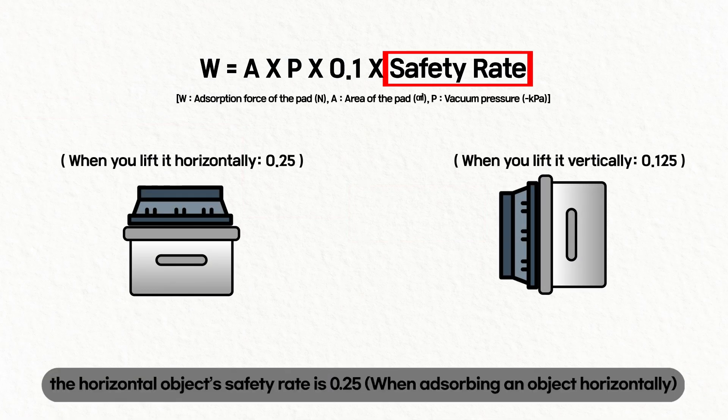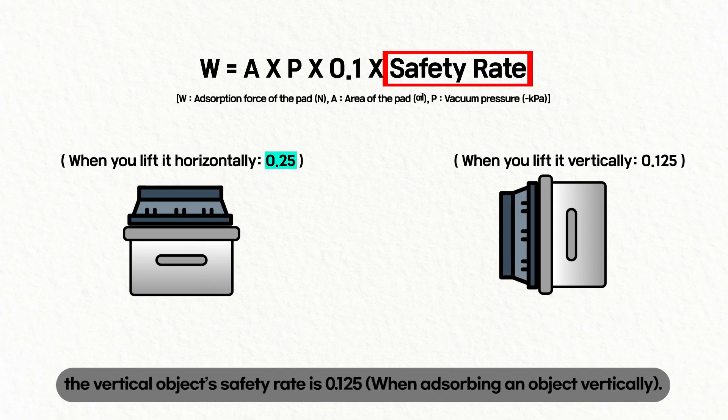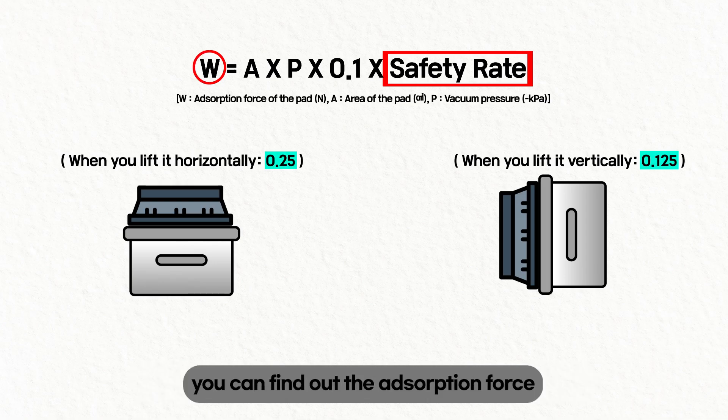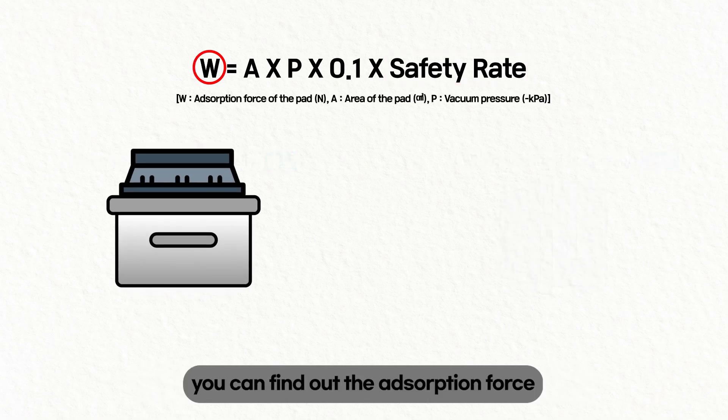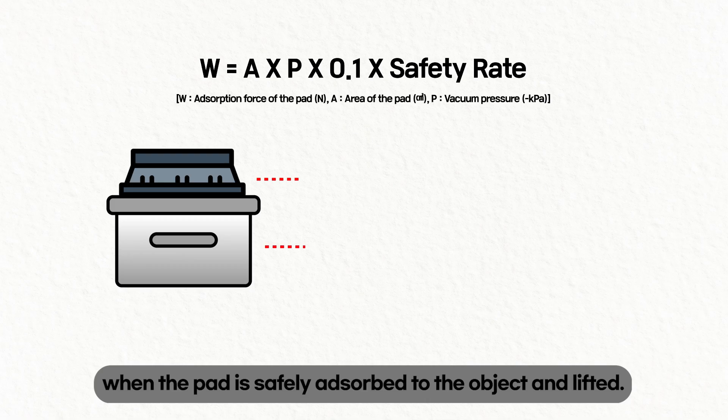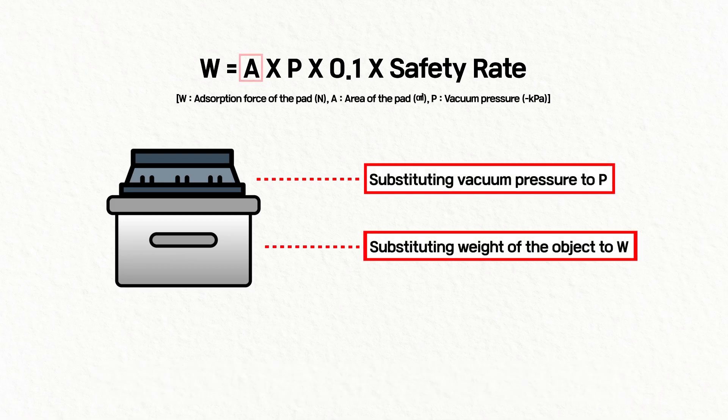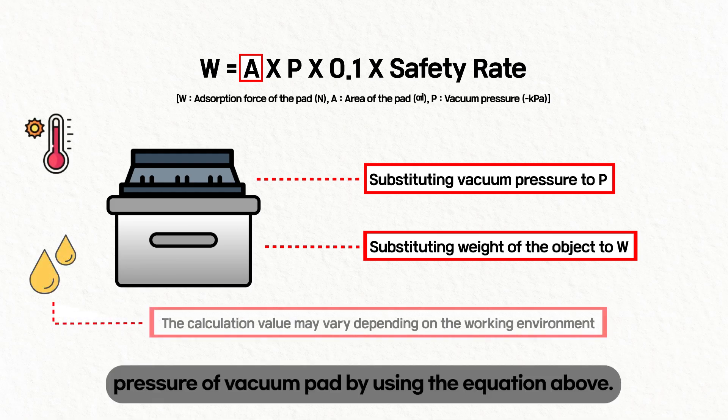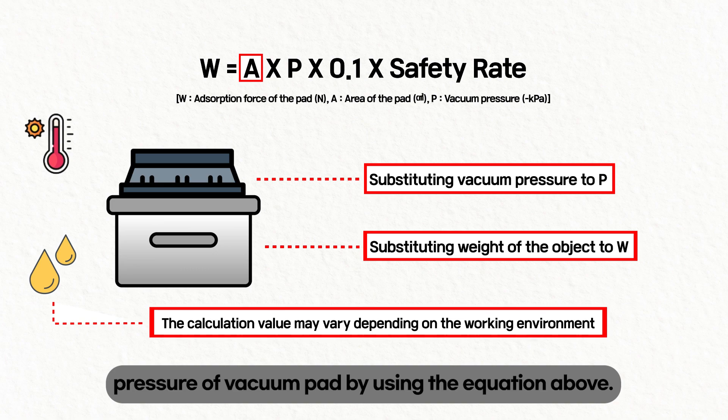Generally, the horizontal object's safety rate is 0.25. The vertical object's safety rate is 0.125. When you apply these variables to the equation, you can find out the absorption force when the pad is safely absorbed to the object and lifted. By this way, you can get the area of the vacuum pad by inserting weight of the object and vacuum pressure into the equation above.